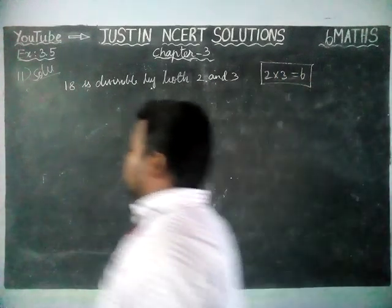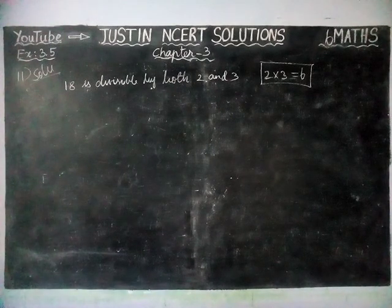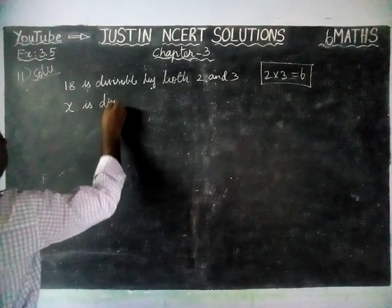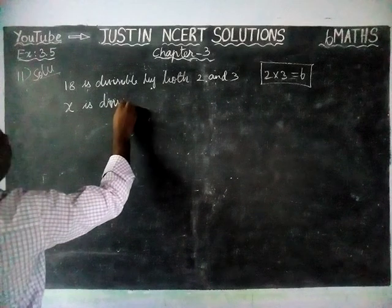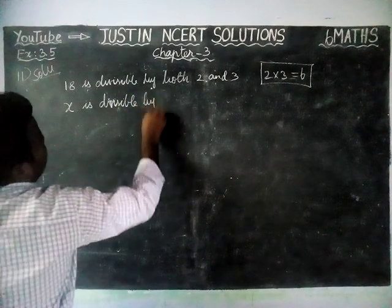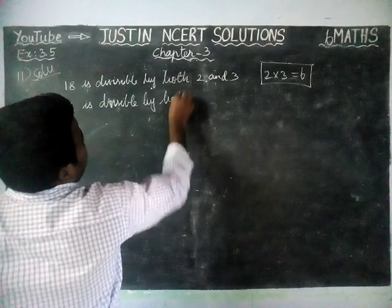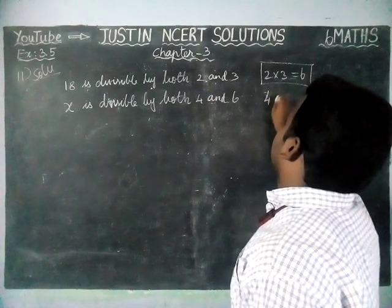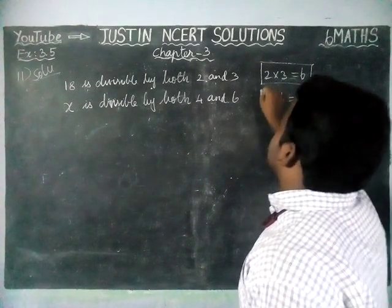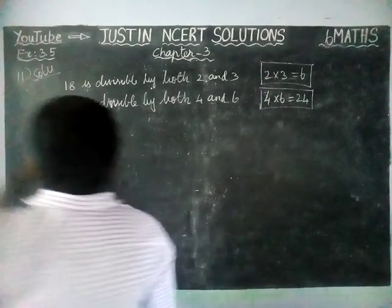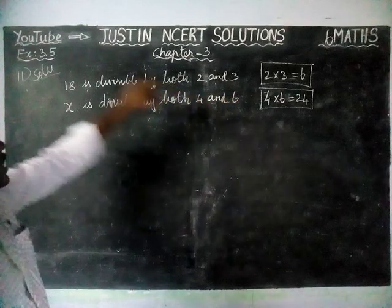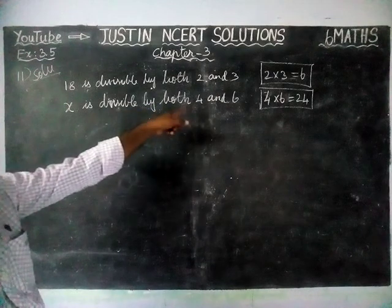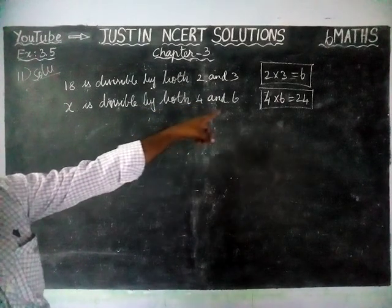Next, a number is divisible by both 4 and 6. We are taking that number as x. So x is divisible by both 4 and 6. Now, 4 × 6 = 24. They are saying that just like 18 is divisible by both 2 and 3 and also by 6, must x also be divisible by 24?